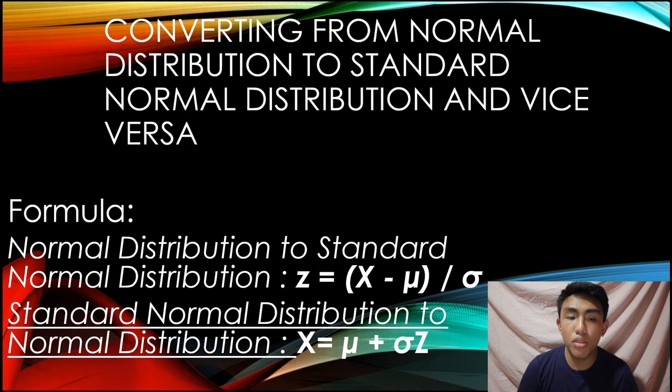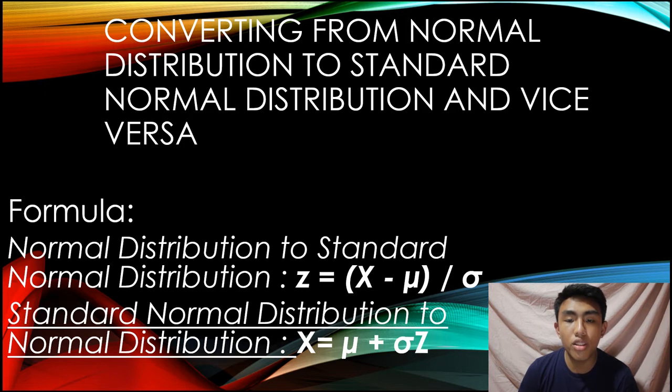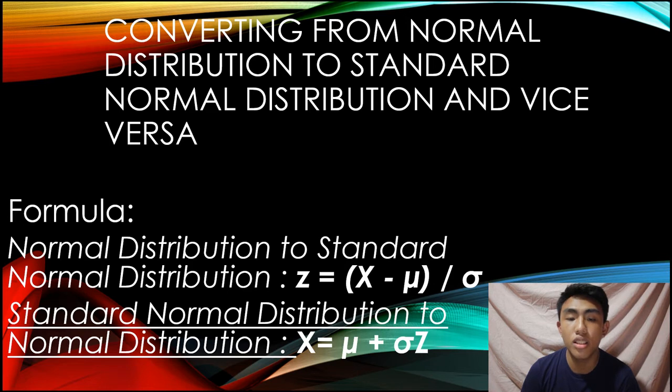So, standard normal distribution. This is considered a special type of distribution. It occurs when a normal random variable has a mean of zero and a standard deviation of one. The normal random variable of a standard normal distribution is called the standard score or a z-score.